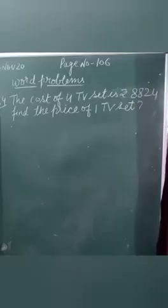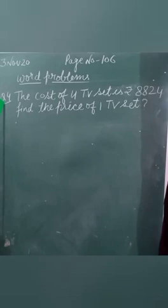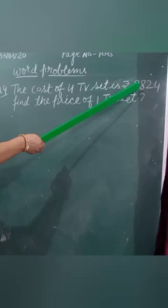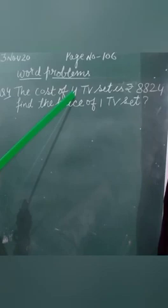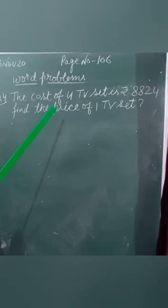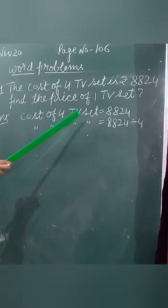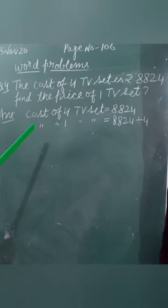Question number 4: The cost of 4 TV sets is Rs. 8,824. Find the price of 1 TV set. Now the statement is, cost of 4 TV set is equal to 8,824. Cost of 1 TV set: 8,824 divided by 4.